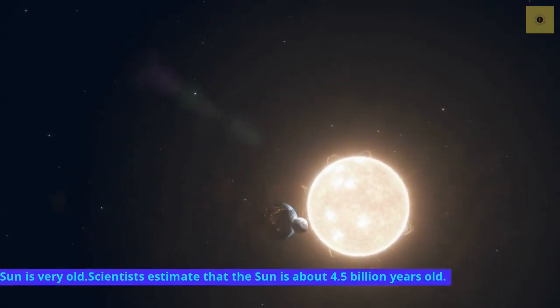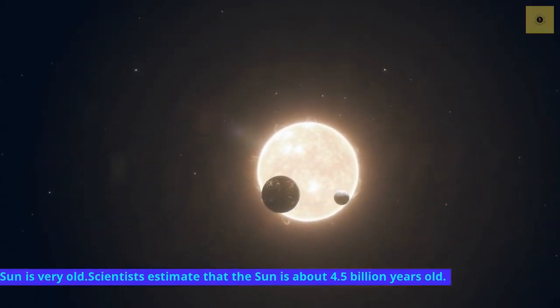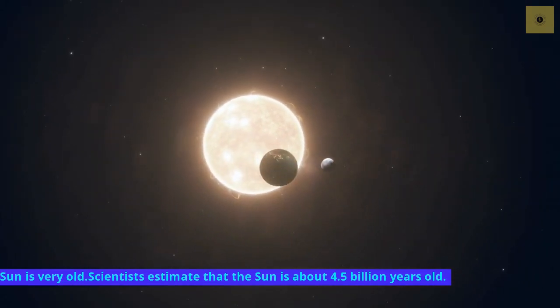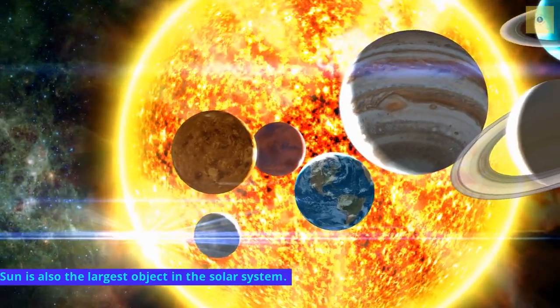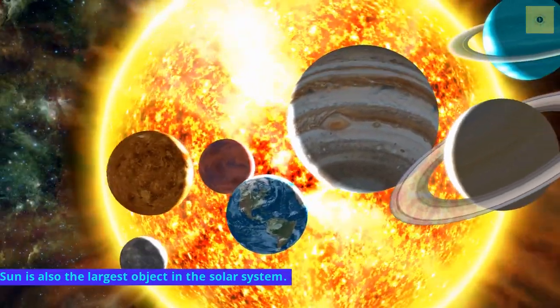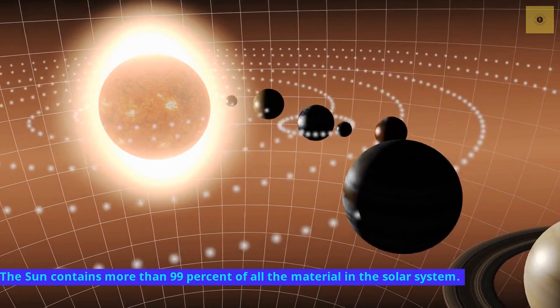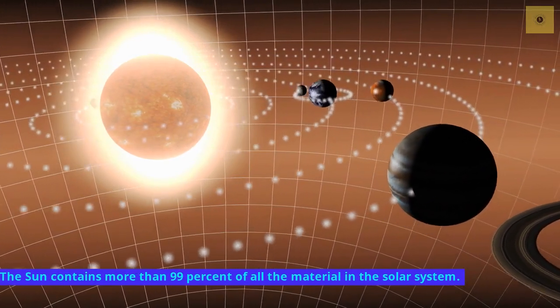Sun is very old. Scientists estimate that the Sun is about 4.5 billion years old. Sun is also the largest object in the solar system. The Sun contains more than 99% of all the material in the solar system.